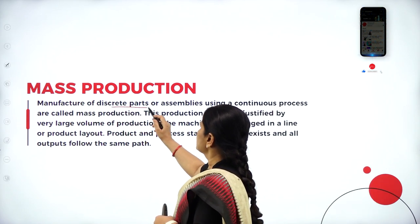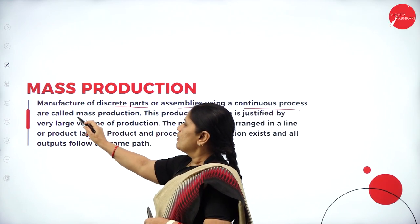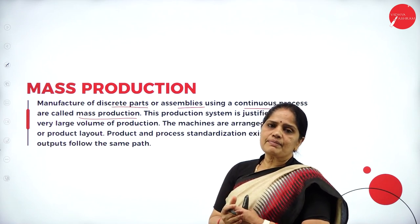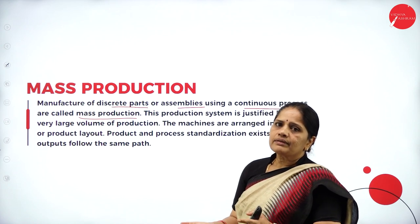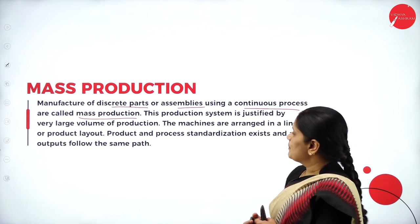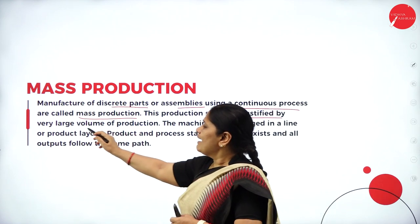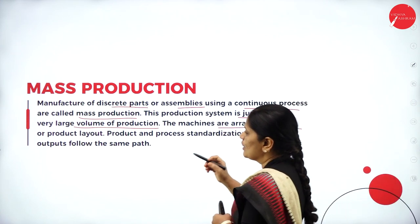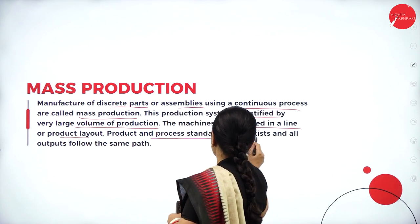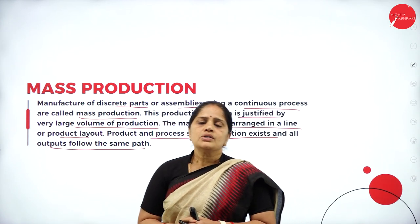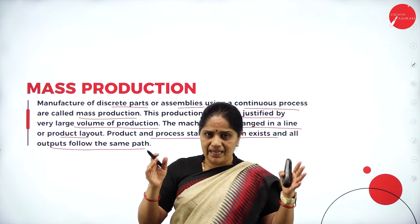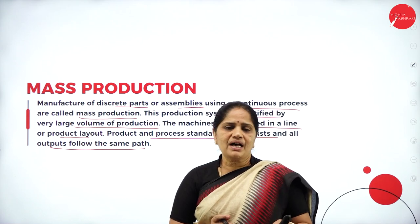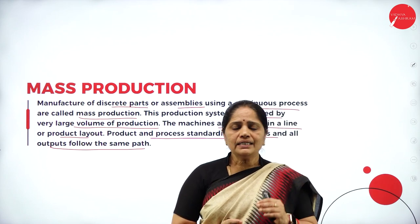The manufacture of discrete parts or assemblies using a continuous process is called mass production. If a company is manufacturing spare parts or assemblies for a bigger manufacturing unit, such production is done in mass production. It is justified by a very large volume of production, and the machines are arranged in a line or product layout. Product and process standardization exist, and all outputs follow the same path.